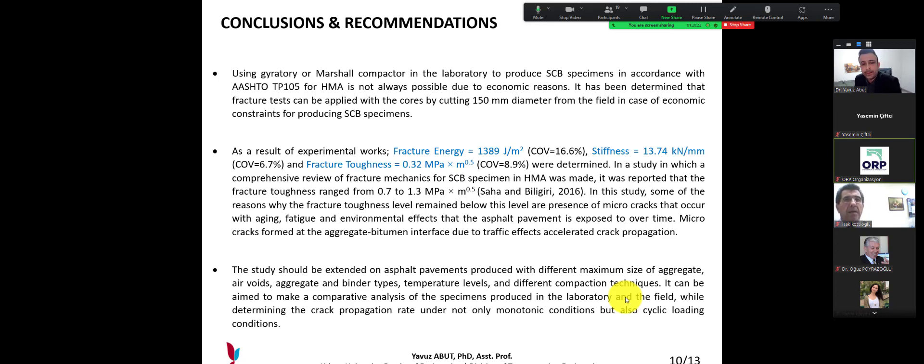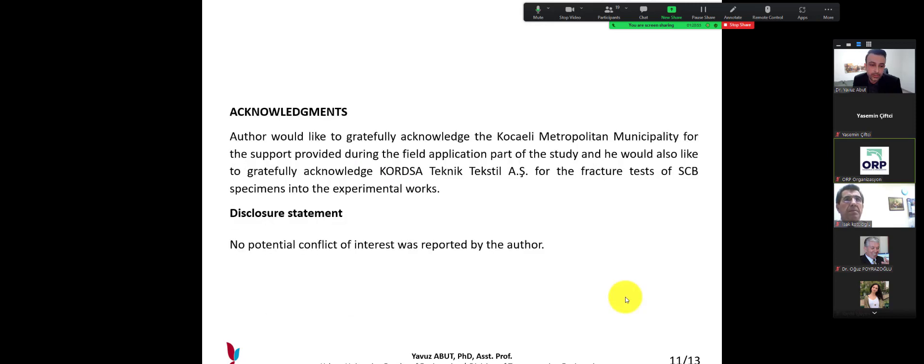And last, the study should be extended, we recommend, on the asphalt pavements produced with different maximum size of aggregates, air voids, aggregate and binder types, temperature levels and different compaction techniques. It can be aimed to make a comparative analysis of the specimen produced in the laboratory and the field while determining the crack propagation rate under not only monotonic conditions but also cyclic, dynamic loading conditions.